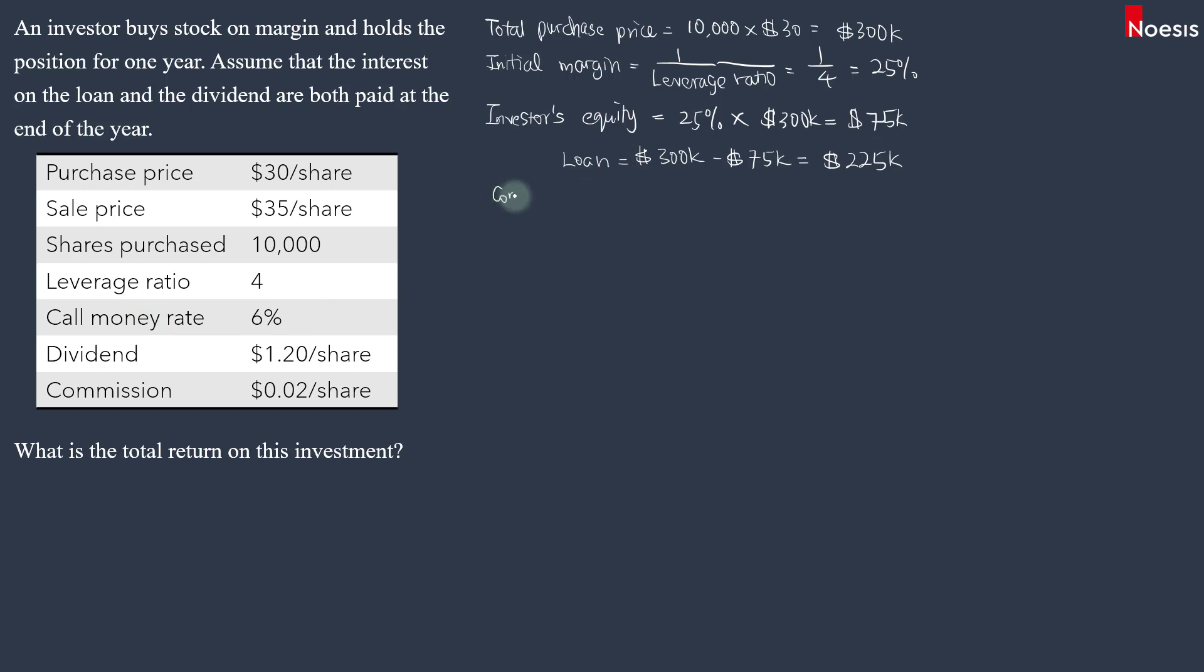Now, there is a commission on the purchase. So the commission on the purchase is $0.02 a share. For 10,000 shares, that's 10,000 times $0.02 a share. So that's $200.